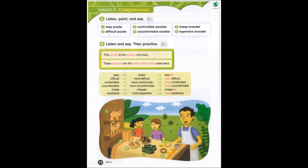Page 32. B. Listen and say. Then practice. This puzzle is the easiest one here. These sandals are the most comfortable ones here. Easy. Easier. Easiest. Difficult. More difficult. Most difficult. Comfortable. More comfortable. Most comfortable. Uncomfortable. More uncomfortable. Most uncomfortable. Cheap. Cheaper. Cheapest. Expensive. More expensive. Most expensive.